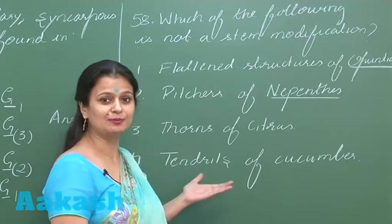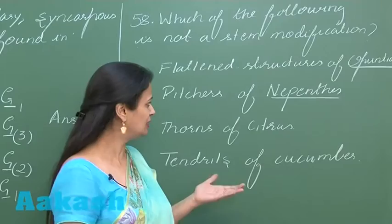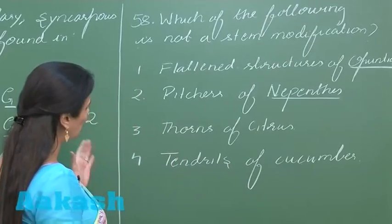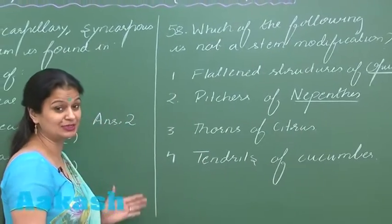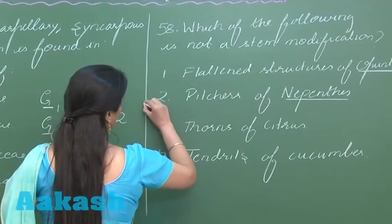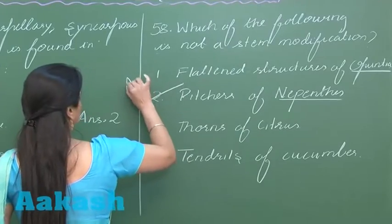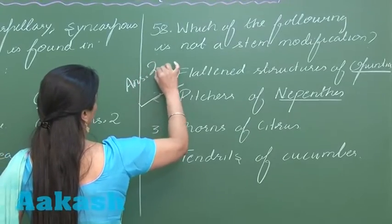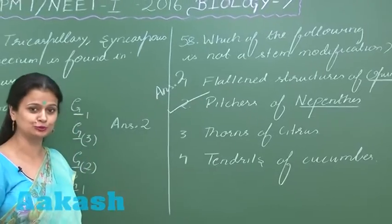Tendrils of cucumber, bud modification. So it means out of these four options the one which is associated with the leaf, that is pitcher of Nepenthes. This is not the stem modification. So the right answer for 58 is option number 2.